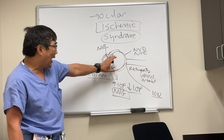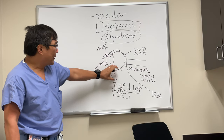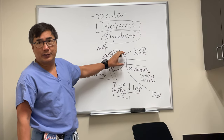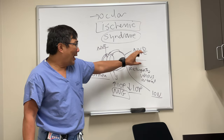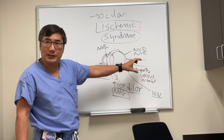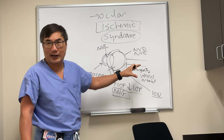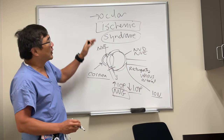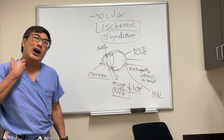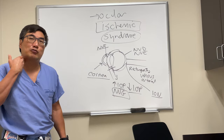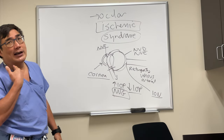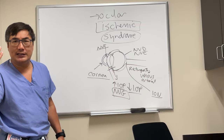Ocular ischemic syndrome means you have ischemia, and the blood supply to the optic nerve and retina is derived from the ophthalmic artery. The central artery supplies the retina. So we're talking about ophthalmic artery disease or more proximal disease — the internal carotid artery. The most common cause of ocular ischemic syndrome is proximal carotid occlusive disease, so we need carotid imaging, usually CTA of the head and neck or MRA of the carotid.